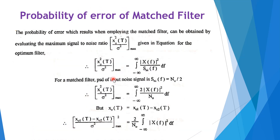Now the probability of error of the match filter. The probability of error, when employing the match filter, can be obtained by evaluating the maximum signal to noise ratio x_o²(t)/σ² for the optimum filter. The maximum SNR is the integration from −∞ to ∞ of |X(f)|² divided by SNI(f) df. For the match filter, SNI(f) = N0/2.